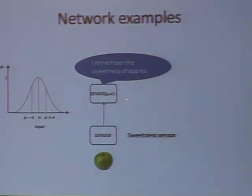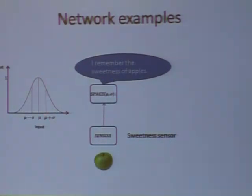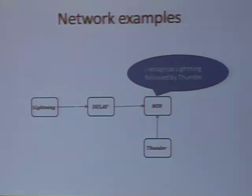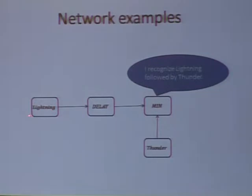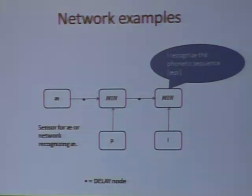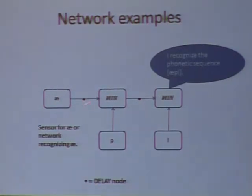The space node can remember values. In this case, it remembers the sweetness of an apple by putting the sigma — the mu — in a proper place. If this node receives the same apple again, it will output one. It's a memory of values. We also have a time memory, handled by a delay node, which delays the signal by one step. For example, lightning, then a delay, then comes thunder — so this node recognizes lightning followed by thunder. In this way, we can build sequences of any kind. The delay nodes are shown as little dots.